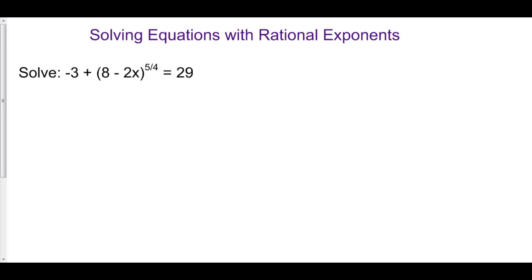Finally, let's solve equations with rational exponents. For example, here we have negative 3 plus quantity 8 minus 2x to the 5 over 4 equals 29.